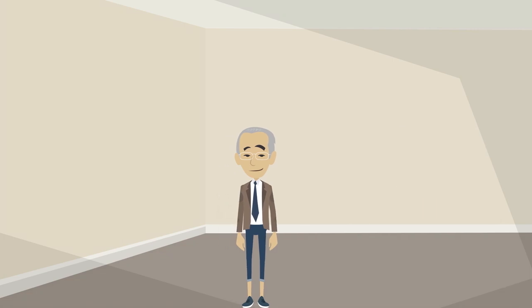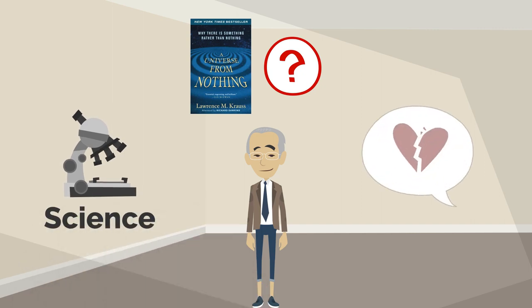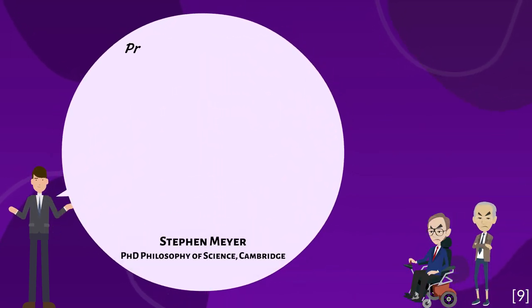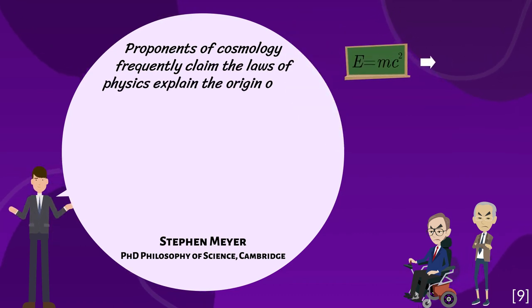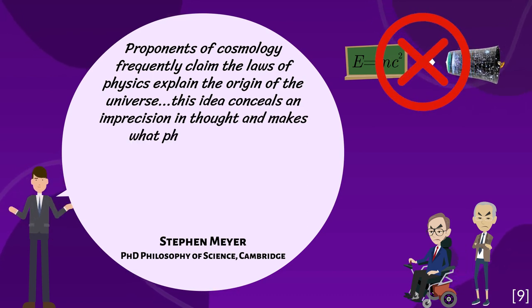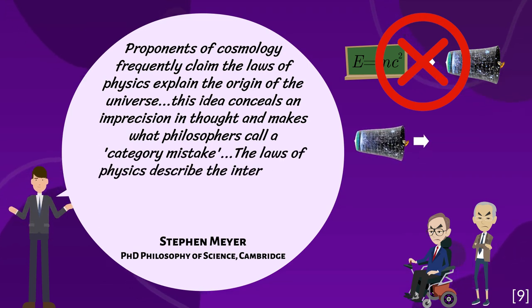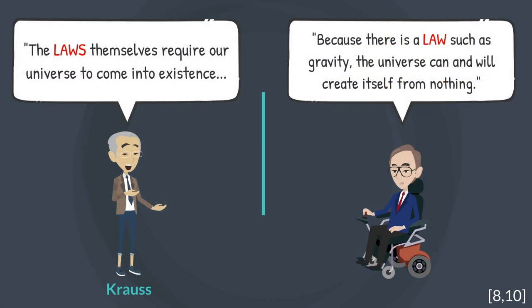This is where we have got to think for ourselves. Are we really interested in the science, or are we just playing word games? Dr. Stephen Meyer points out, proponents of cosmology frequently claim the laws of physics explain the origin of the universe. This idea conceals an imprecision in thought and makes what philosophers call a category mistake. The laws of physics describe the interactions of things, matter and energy, that already exist within space and time. How could the laws have an effect before the material world even exists?